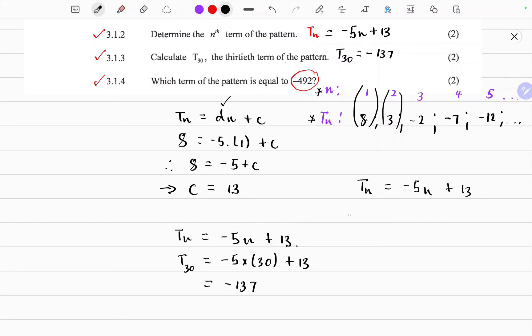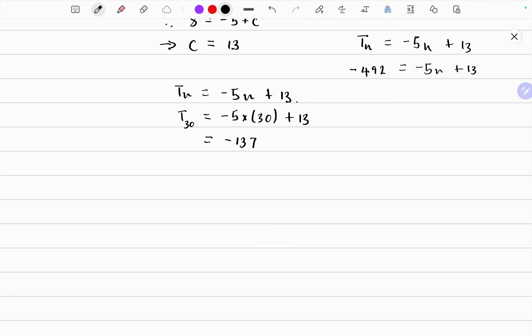So now they give us Tn, which is negative 492, and they just want us to find the position for this term. Minus 505 is equals to minus 5n. If we divide both sides by negative 5, implies that n, therefore n should be equals to 101.